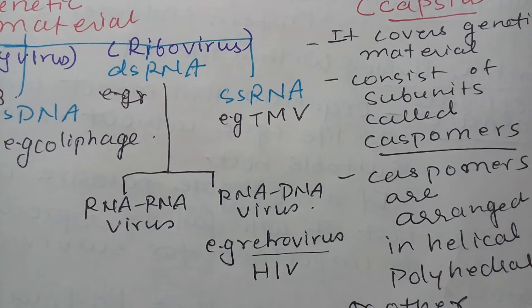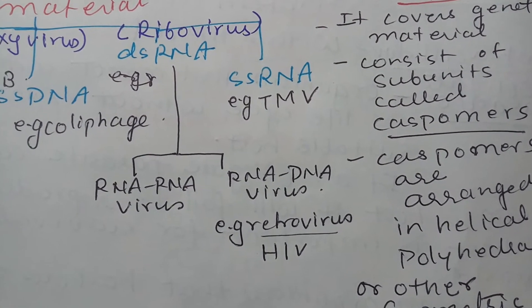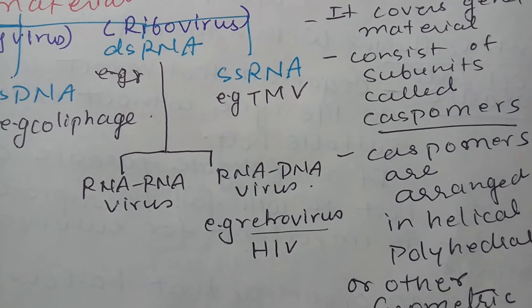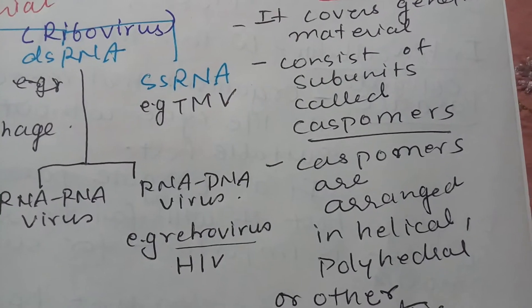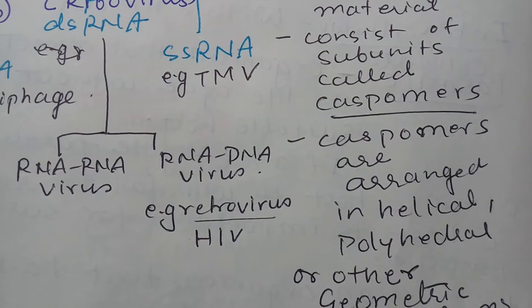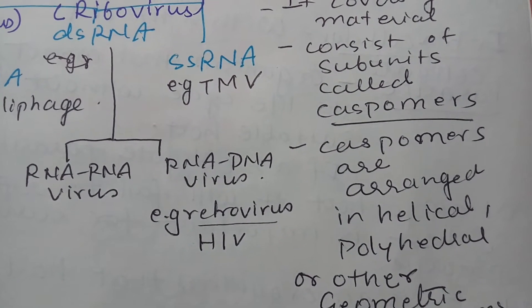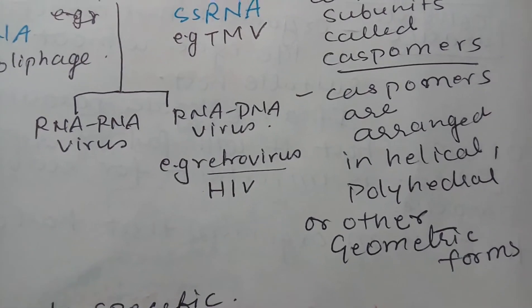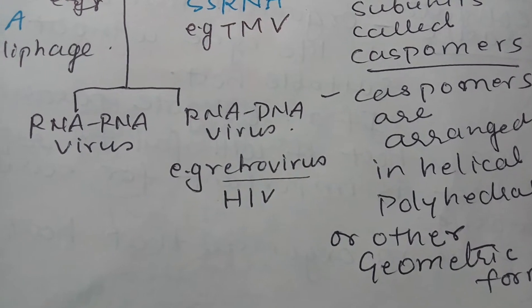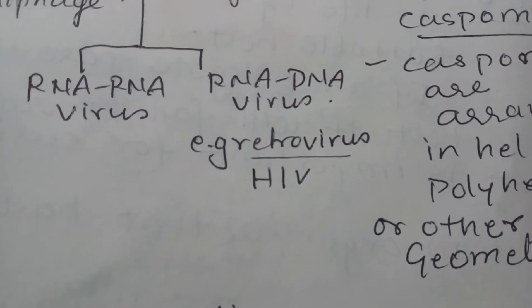What does this mean? In an RNA-RNA virus, when they enter the host, they form RNA copies in the host and this is how they multiply. Whereas in an RNA-DNA virus, the virus contains double-stranded RNA as genetic material, but upon entering the host, they form DNA, and the DNA is again converted back to RNA. This is very common in a group of viruses called retroviruses.